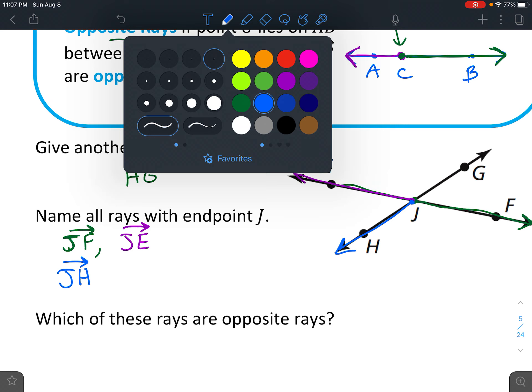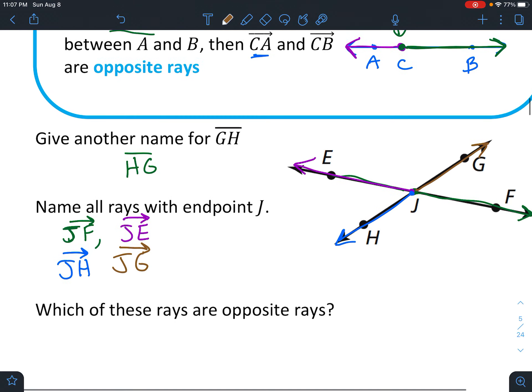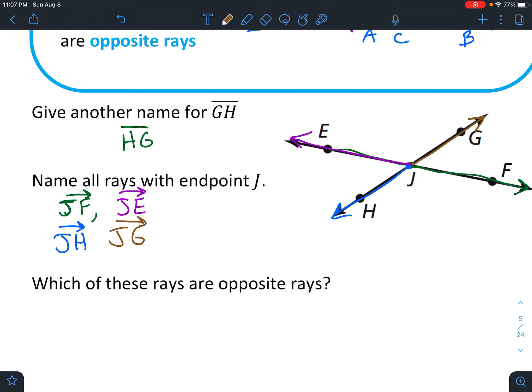And lastly, we have, this brown, JG. Okay, which of these rays are opposite rays? So the ones that form a complete line and share an endpoint. So that means the first two we listed are opposite rays. So JF and JE as well as JH and JG.